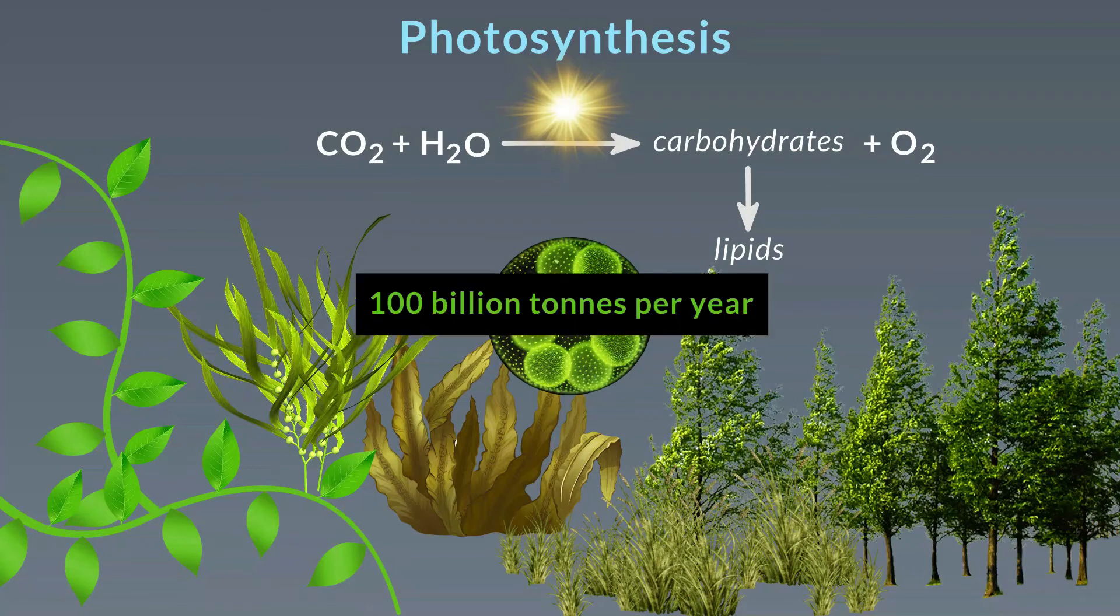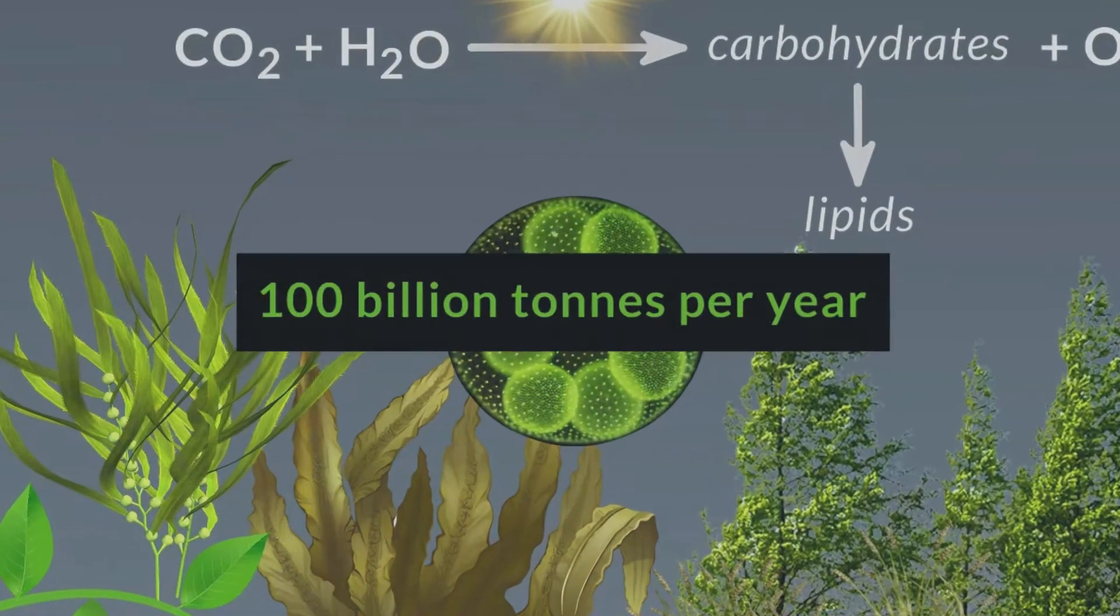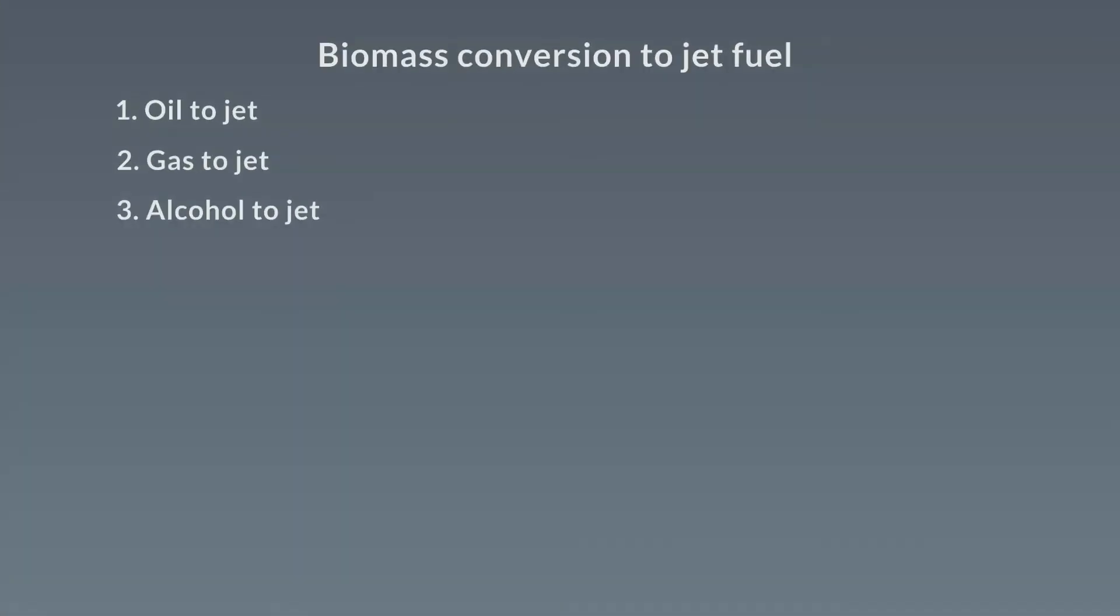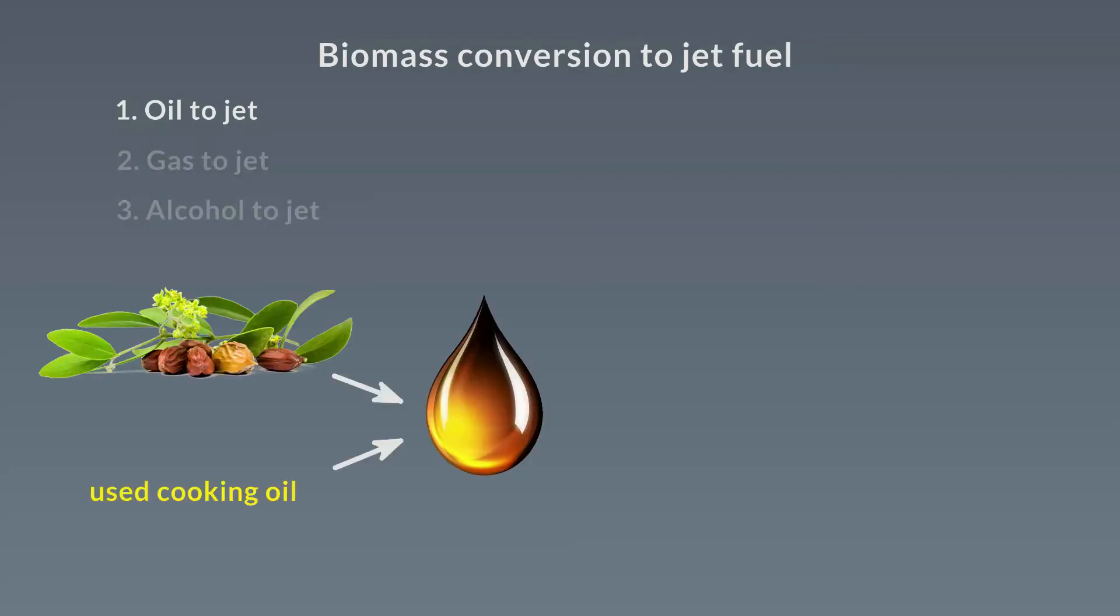Photosynthetic organisms create over 100 billion metric tons of biomass per year. Biomass represents the only renewable energy source that contains carbon. So how is biomass converted to jet fuels? There are several methods.